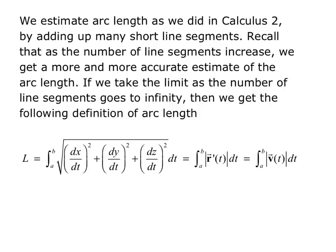Capital L equals the integral from A to B, so our starting point is A, our ending point is B, of the square root of dx/dt quantity squared plus dy/dt squared plus dz/dt squared, and then on the outside of my square root I have a dt, so I'm integrating with respect to t. But notice that this whole expression that's underneath the square root, and including the square root, is actually the magnitude of r prime of t. So I can actually shorten my definition to L equals the integral from A to B of the magnitude of r prime of t dt. And I could also write that as the integral from A to B of the magnitude of velocity dt.